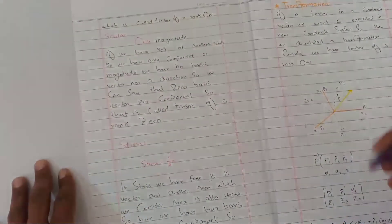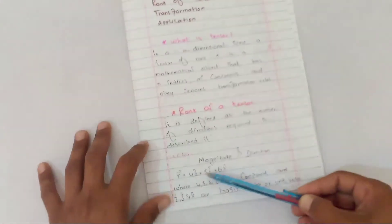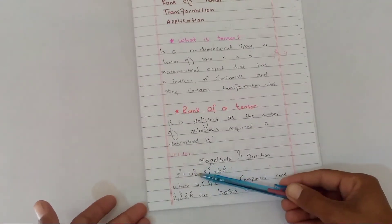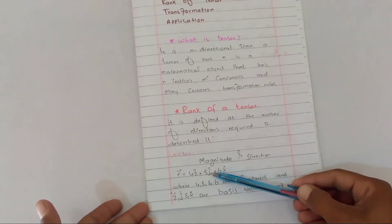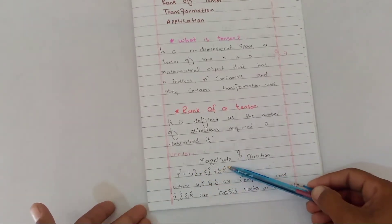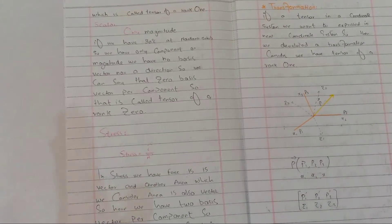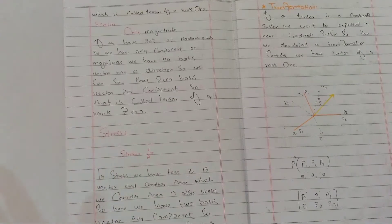A vector is called a tensor of rank one. This is because there is one basis vector per component — written as v_i e_i — meaning one basis vector per component. If we have one basis vector per component, we have a rank-one tensor. If we have zero basis vectors per component, we have a rank-zero tensor.